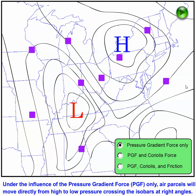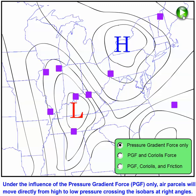For our first case, we'll pretend that only the pressure gradient force is acting on air parcels, which are marked by these purple boxes. If only the pressure gradient force acts, air parcels cross isobars perpendicularly, flowing from higher pressure toward lower pressure like this.